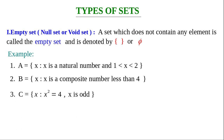Third example: C equals the set of all x such that x² = 4 and x is odd. The numbers satisfying x² = 4 are 2 and −2, but both of them are even. There is no odd number x satisfying x² = 4, so C is also an empty set.